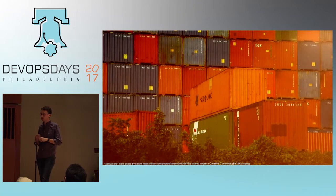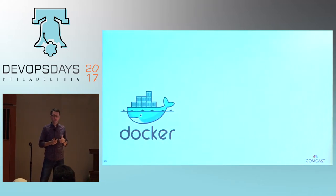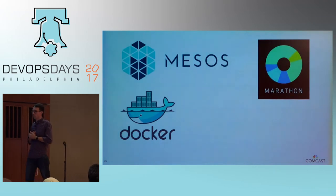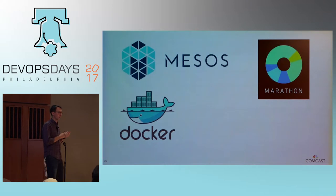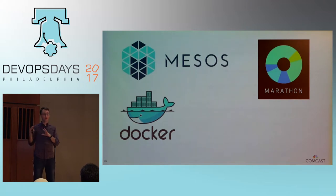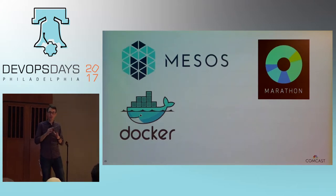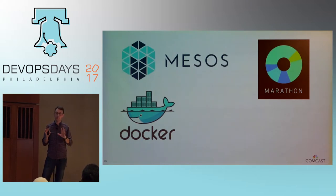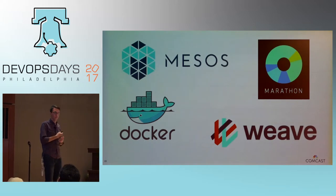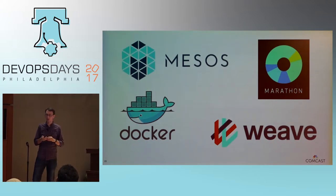From an infrastructure perspective, we decided to use containers — running everything in Docker. For container orchestration, we decided to go with Apache Mesos and Marathon. A couple of these decisions were influenced by experiences that people on our team, specifically the systems engineers, had with another project at Comcast where they had success with this model. We've since played with some other things but stuck with Mesos and Marathon, not using DCOS. For networking we're using Weave — a Docker overlay networking solution for multi-host connections — and HAProxy for load balancing.